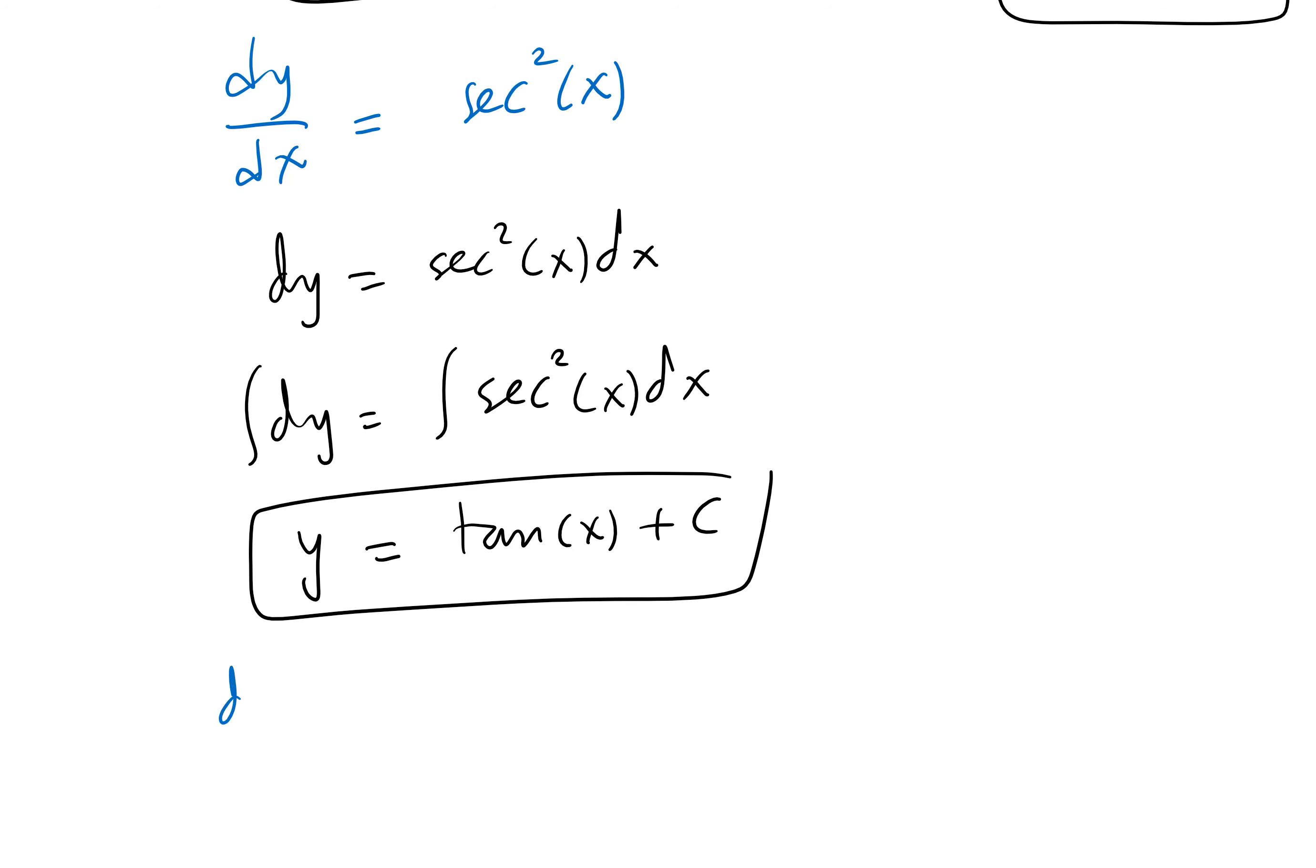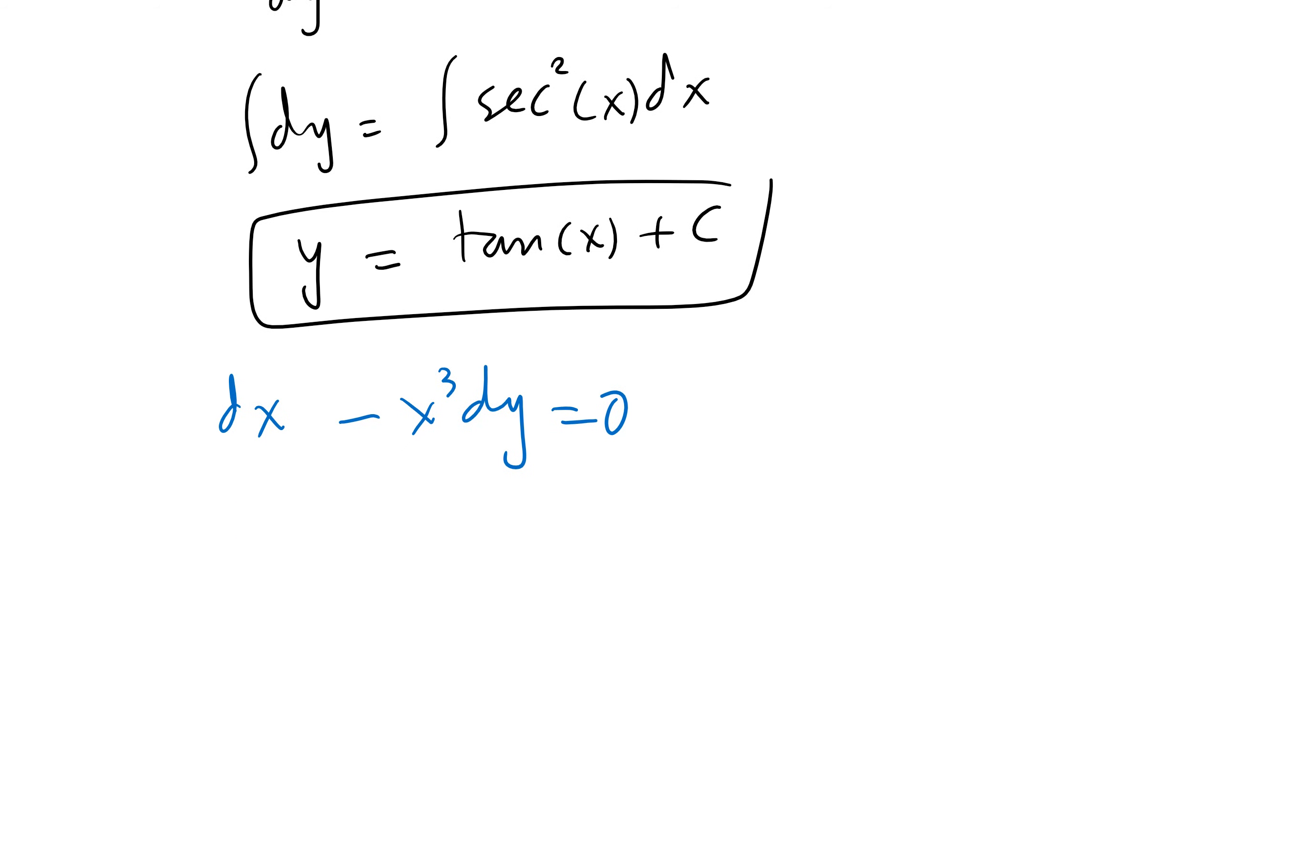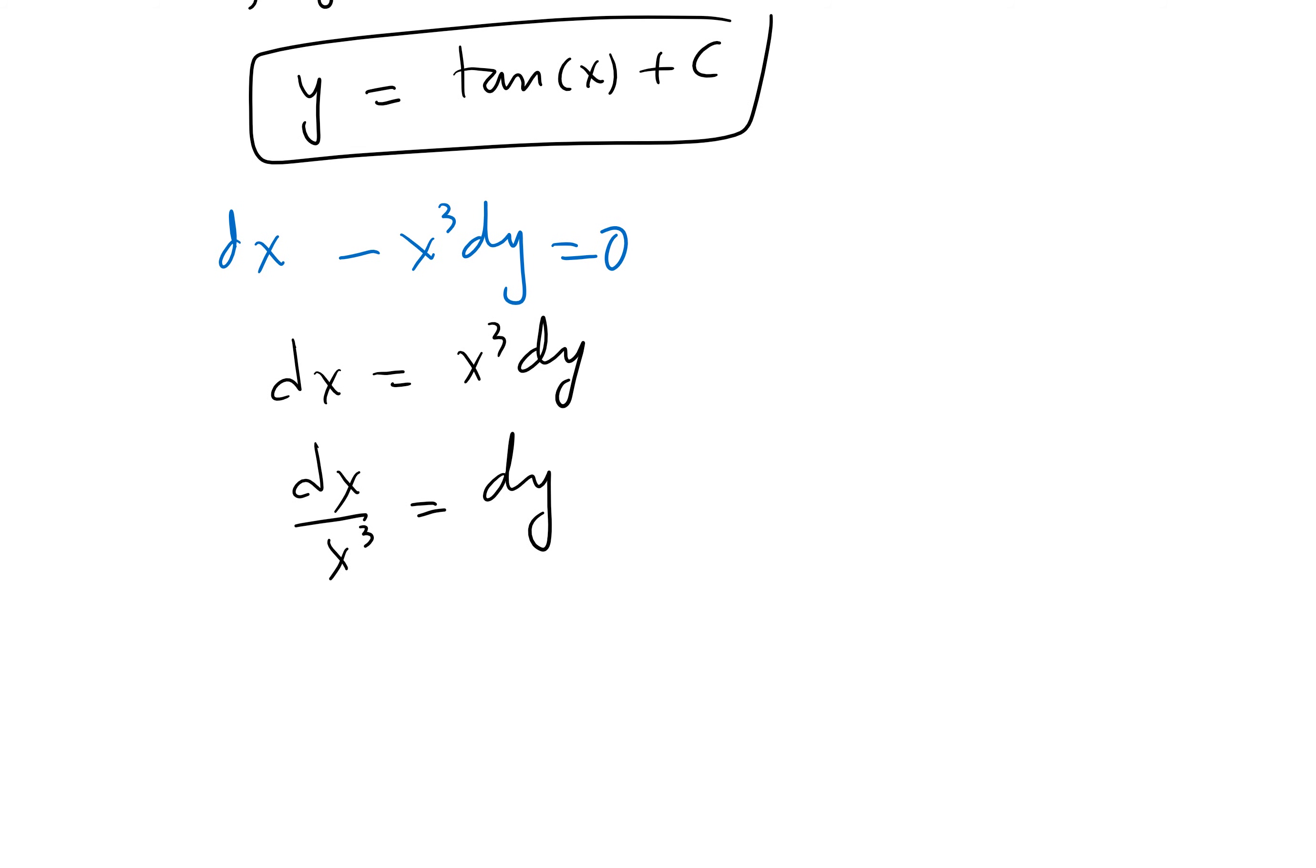We can look at more examples. Let's say dx minus x cubed dy equals 0. How do we solve such equation? We can add this to both sides, we can add this to both sides, divide by x cubed. I always like to put the y's on the left side, so you can rewrite it like so.